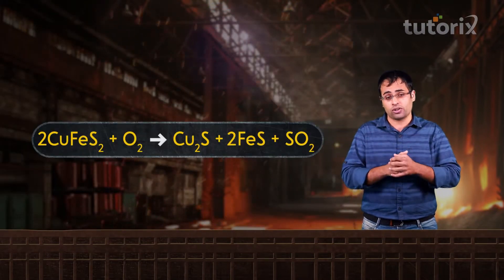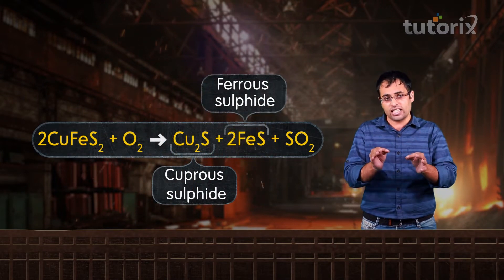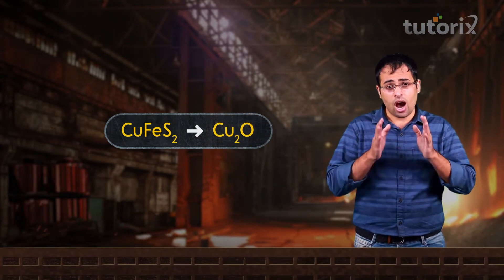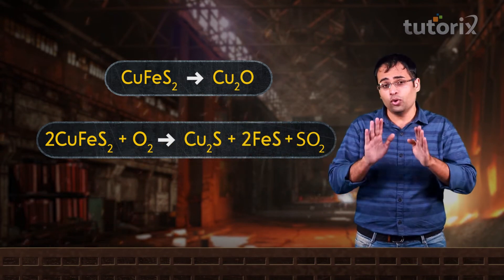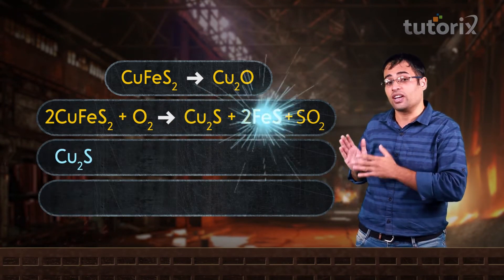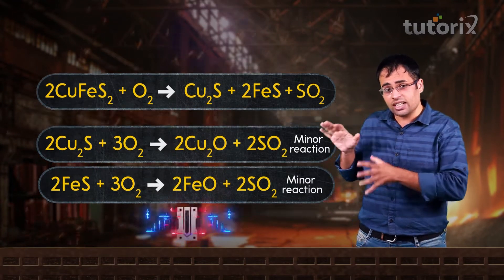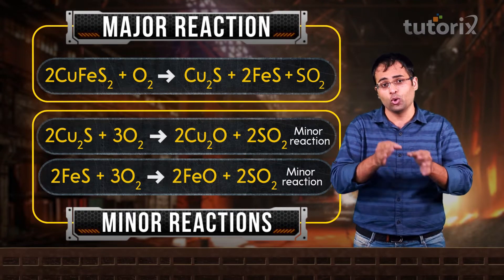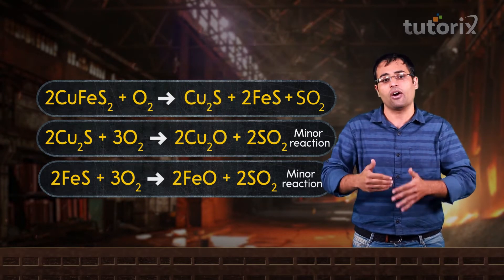The main reaction occurring in this process is where copper pyrite reacts with oxygen to form cuprous sulfide, ferrous sulfide, and sulfur dioxide. Our aim was to convert this sulfide ore into its oxide, but here we end up with again cuprous sulfide and ferrous sulfide. However, small amounts of cuprous sulfide and ferrous sulfide do react with oxygen to convert into their respective oxides, but these are just minor reactions. The major reaction is where copper pyrite reacts with oxygen to form cuprous sulfide and ferrous sulfide, so copper is mainly present in the form of its sulfide even after this step.